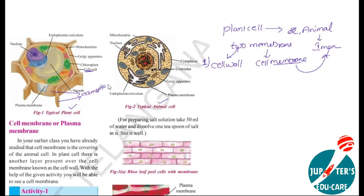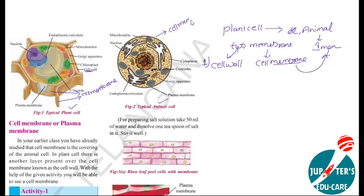If you observe the animal cell, is there any cell wall? There is no cell wall. Only one outermost layer is present here, that is called the cell membrane. That is one membrane — the cell membrane.